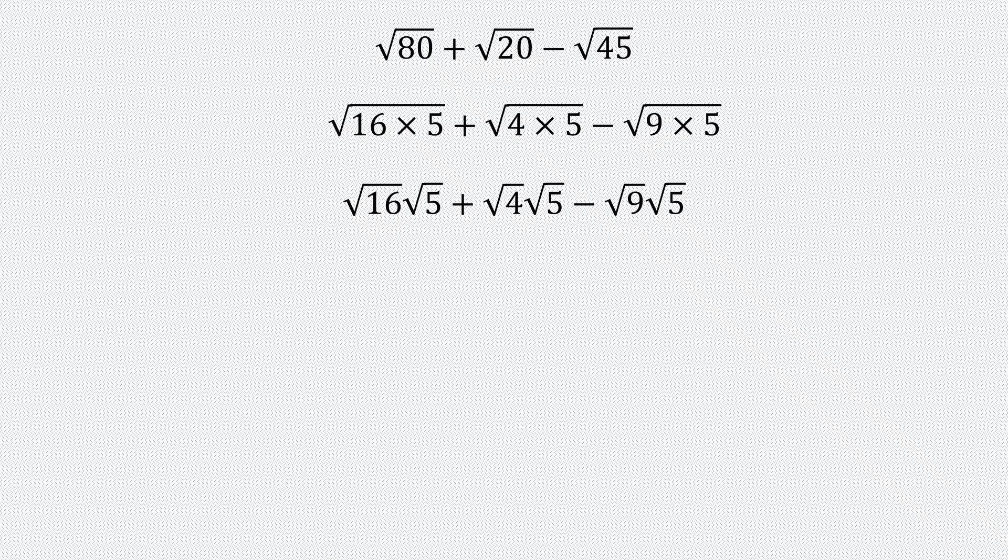Now at this point, we can simplify the square root of a perfect square. So the square root of 16 is 4. The square root of 4 is 2. And the square root of 9 is 3.